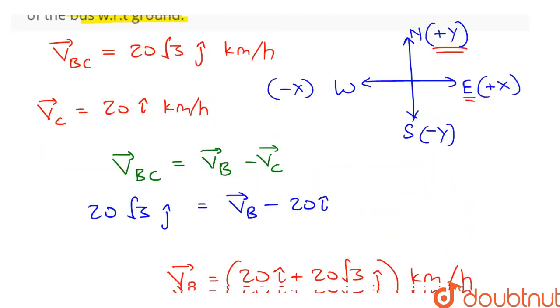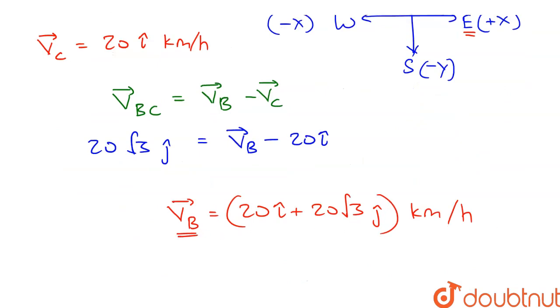So this is the velocity of VB vector, this is the velocity of bus with respect to the ground.